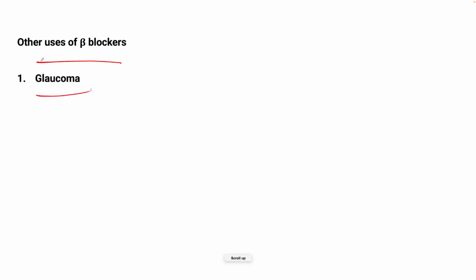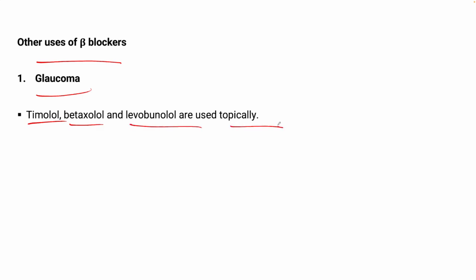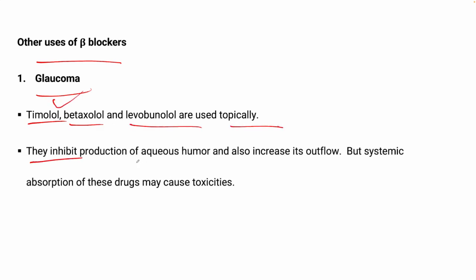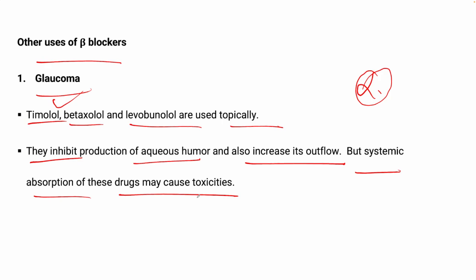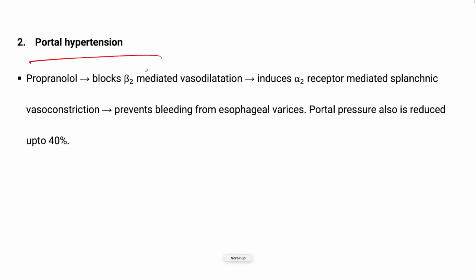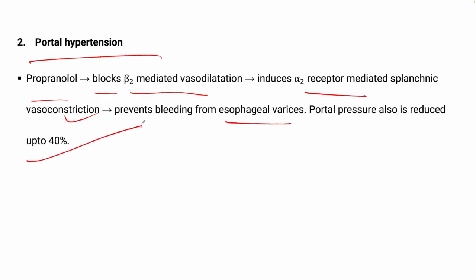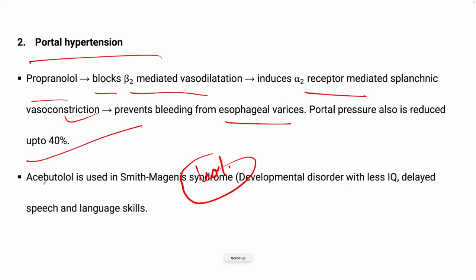Other uses of beta blockers: in glaucoma, timolol, betaxolol, and labetalol are used topically — timolol is most commonly used. They inhibit production of aqueous humor and increase its outflow. Beta blockers are also used in portal hypertension: propranolol blocks beta-2 mediated vasodilation, inducing alpha-2 receptor mediated splenic vasoconstriction, thus preventing bleeding from esophageal varices and reducing portal hypertension by up to 40%. Acebutolol is used in Smith-Magenis syndrome, a developmental disorder with low IQ and delayed speech.